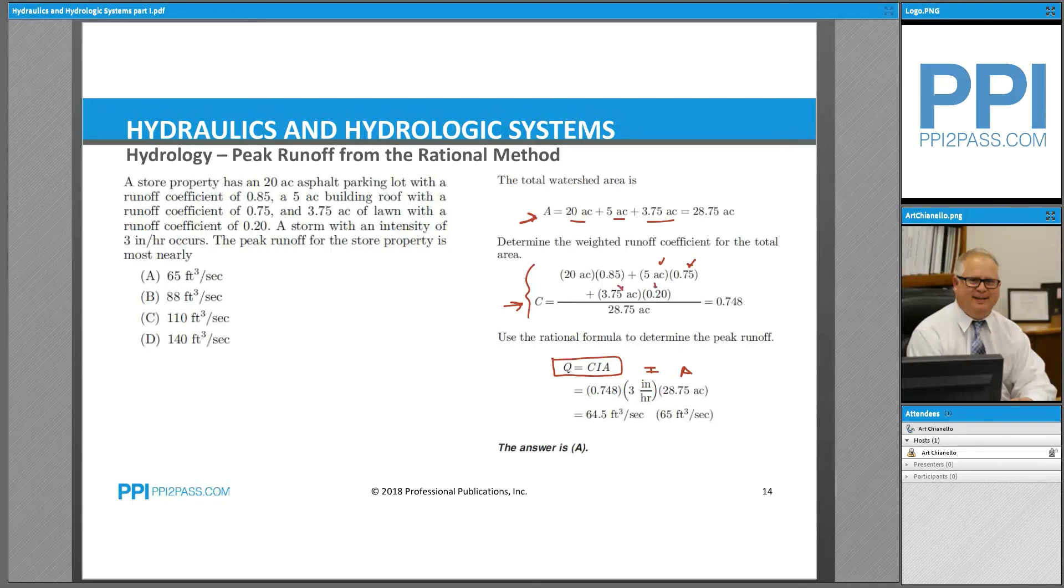Those three terms are in the numerator. In the denominator is the total area, 28.75 acres. That gives us a weighted runoff coefficient of 0.748.